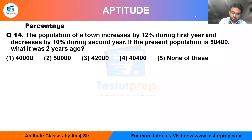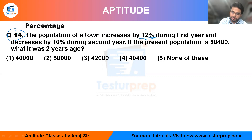Hello friends, this is question number 14 in percentage. In this question, they say the population of a town increases by 12 percent during the first year. After that, it is decreased by 10 percent in the second year. The present population is given, and the question asks what was the population two years ago.